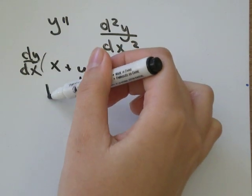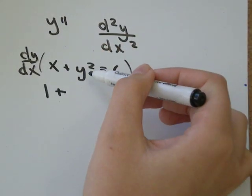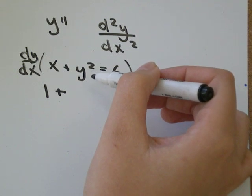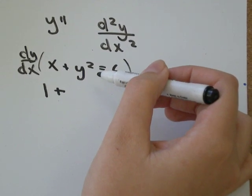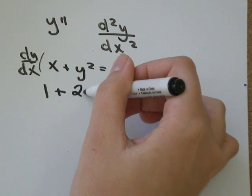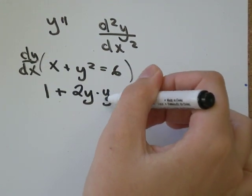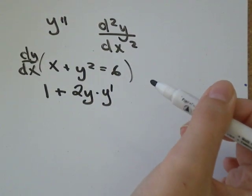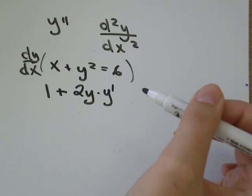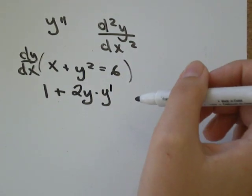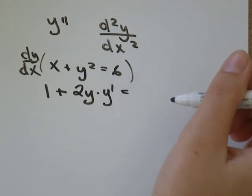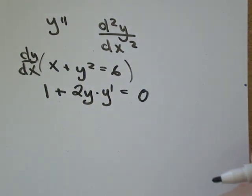So the derivative of x is 1 plus, if this would be x squared instead of y squared, the derivative of that would be 2x. So the derivative of y² would be 2y. And then we always multiply by y prime, because we know y is some function of x, but we're not exactly sure what it is. And it doesn't really matter either. And then the derivative of 6 would be 0.